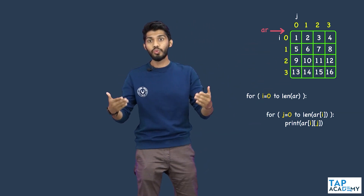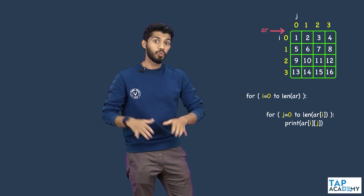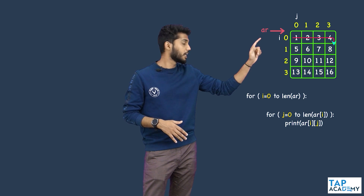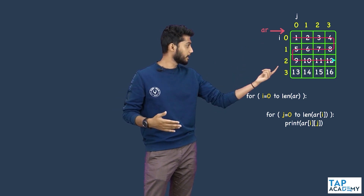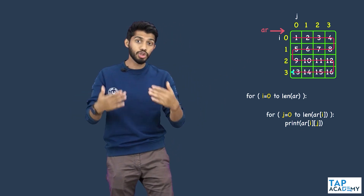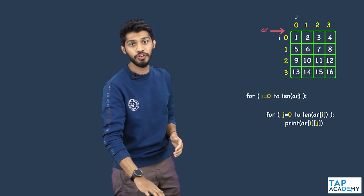This code would print all elements in order: 1, 2, 3, 4, 5, 6, 7, 8, 9, 10, 11, 12, 13, 14, 15, 16. But this is not the final output. The final output should be 1, 2, 3, 4, then 8, 7, 6, 5, then 9, 10, 11, 12, then again in reverse order 16, 15, 14, 13. How to solve this? If you observe carefully, half the problem is already solved — just some small modifications are needed.